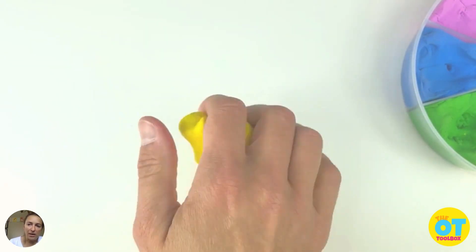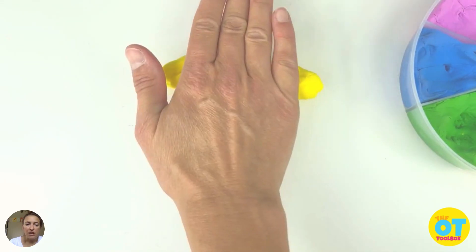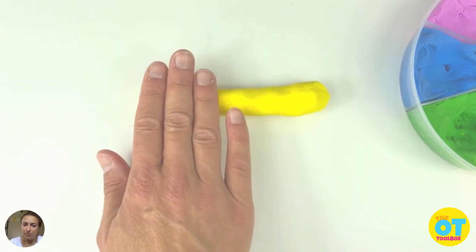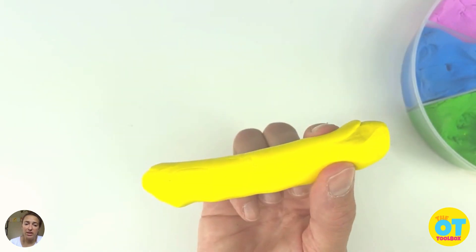Next, squeeze that dough again with your hand to make a fist. We're going to roll it on the table to make a Play-Doh snake. You can make it as long or as thick as you'd like.